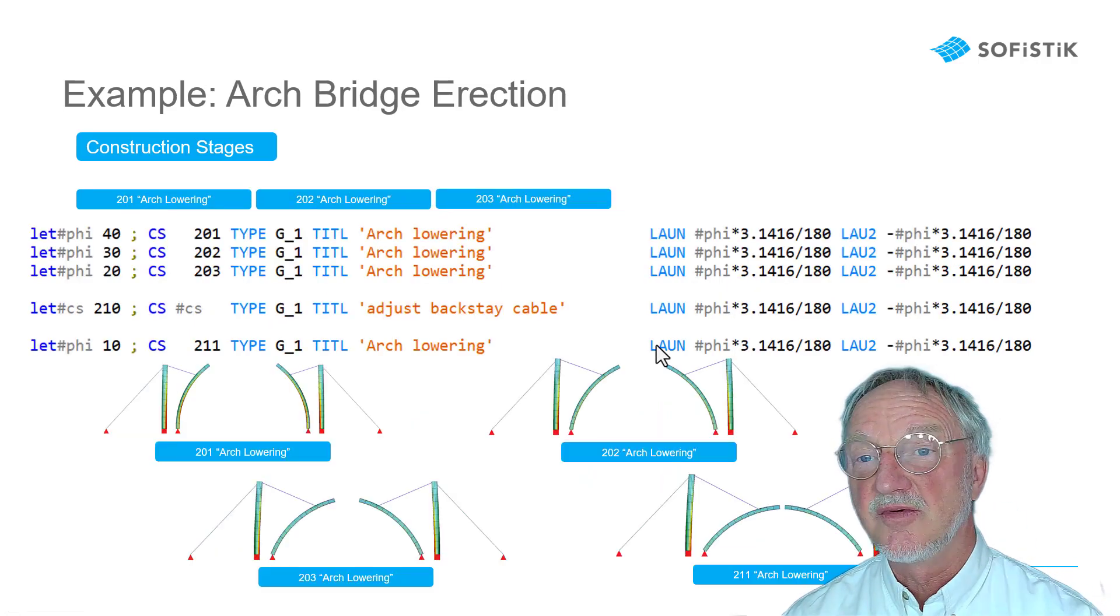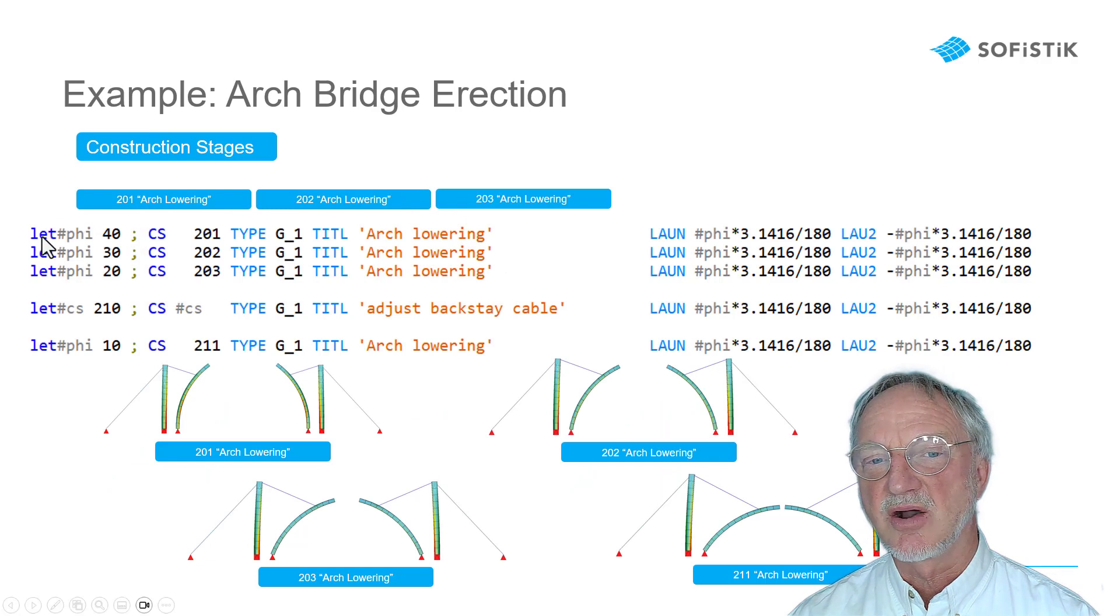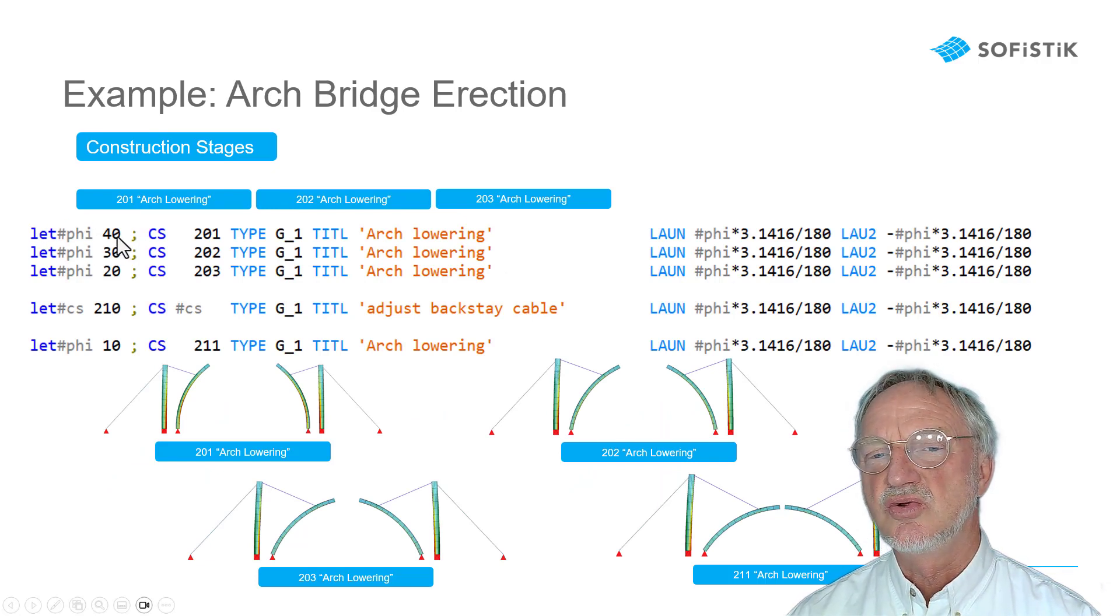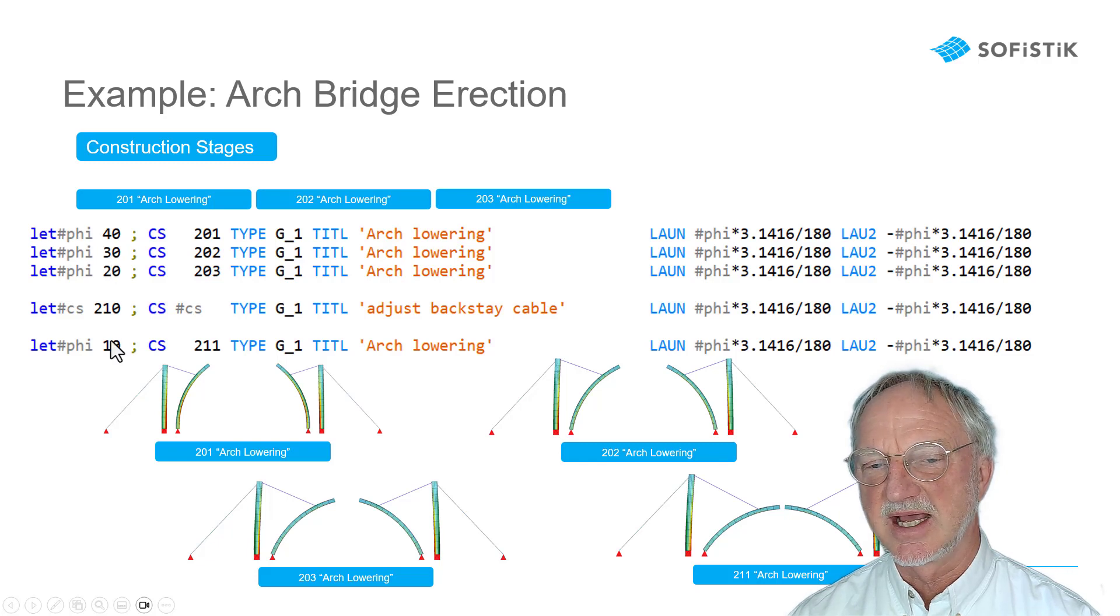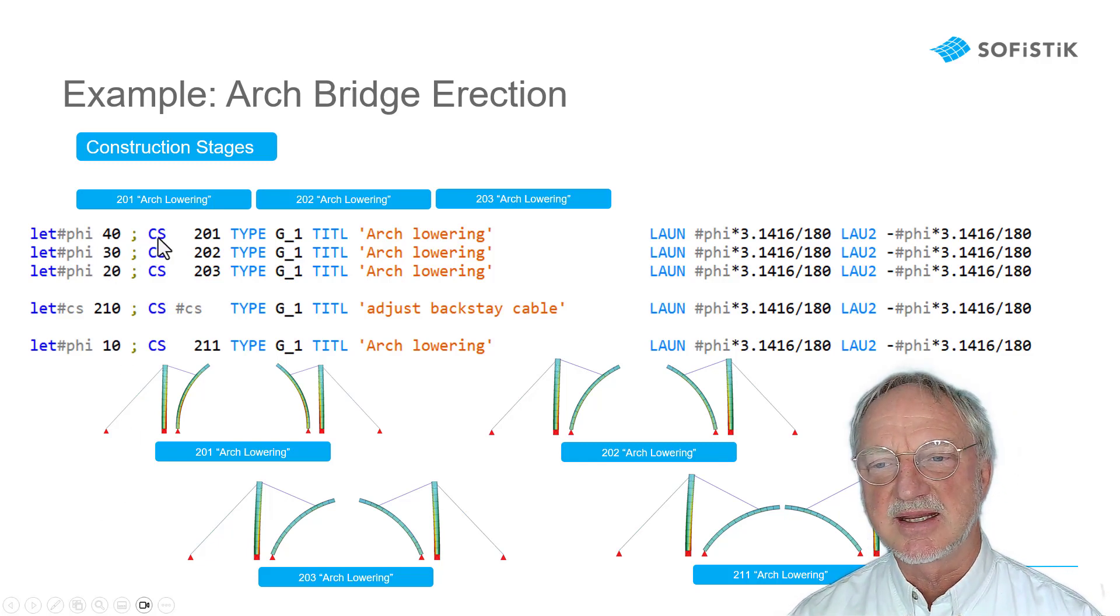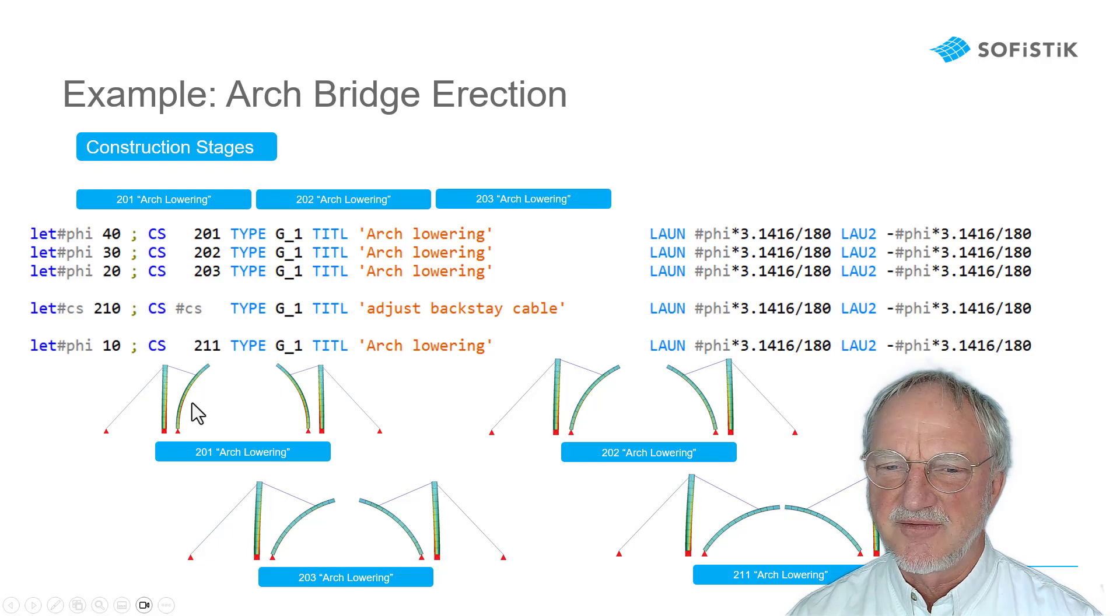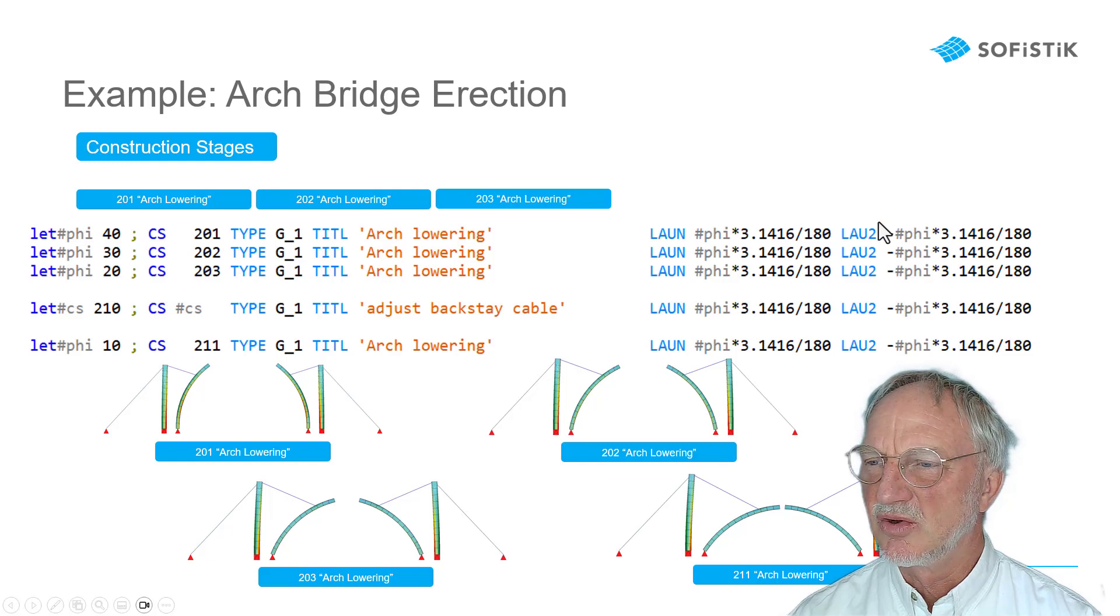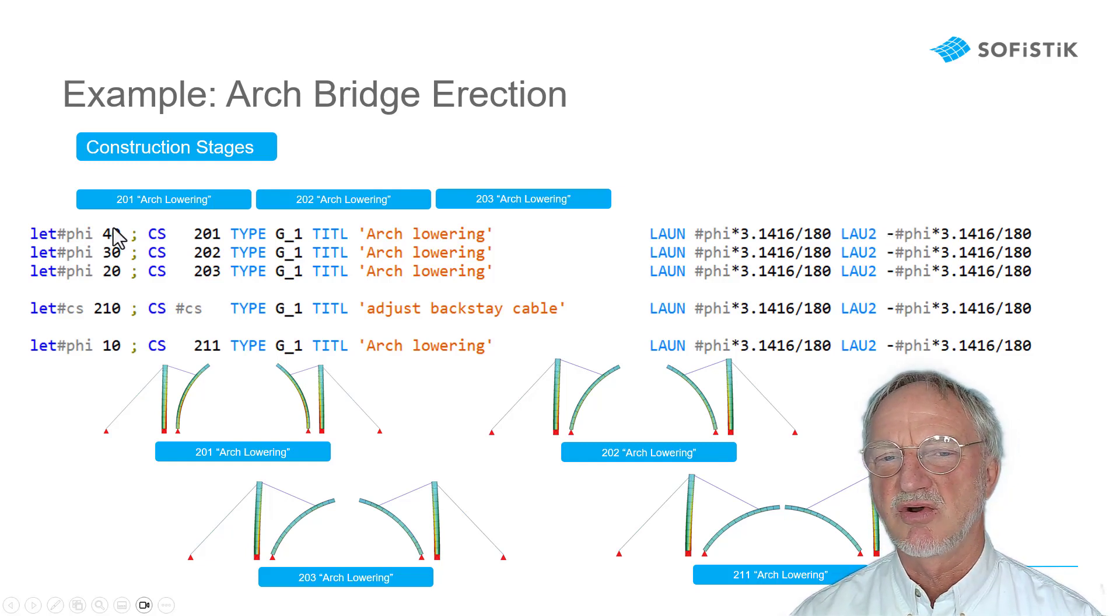Then we come to the rotation. We now change the angle of rotation to 40, 30, 20, 10 and finally 0. And we make a new construction stage, arc lowering, where we now say the left part has now 40 degrees. And the right part, launching 2, has minus 40 degrees. And so on.